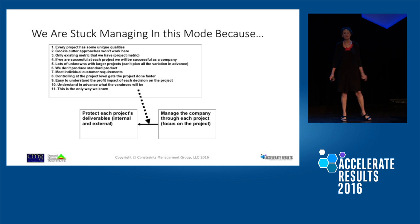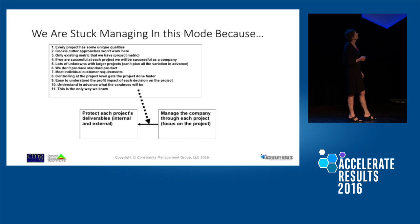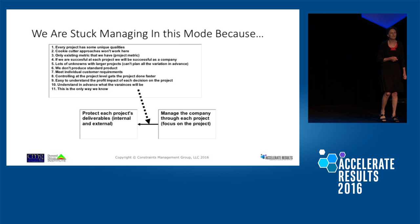They're stuck here because of the assumptions they have. Now look for false assumptions: 'I agree that every project has unique quantities, but a cookie-cutter approach won't work here' — that's not true; a template approach will work. 'The only existing metric we have is a project metric.' 'We don't produce standard products' — that's really not true; they're all different but standard to some level. Number eight is wrong — dead wrong. Nine is dead wrong; it's all costing. Eleven is my favorite: why do we really stay stuck?